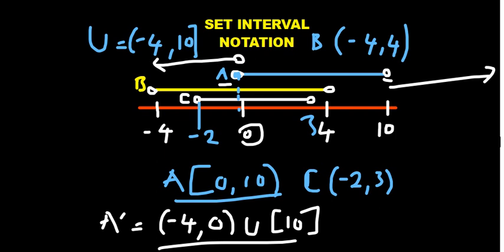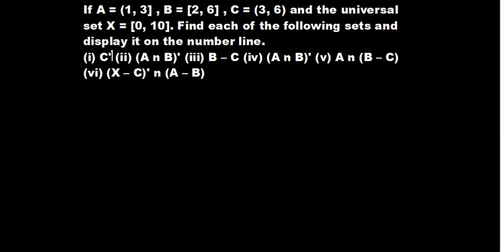If the universal set were the set of real numbers, this part would have moved from 10 all the way up to positive infinity. But basically, this is an introduction to set interval notation. Let's move on to a more complex example to help us understand the concepts more deeply.